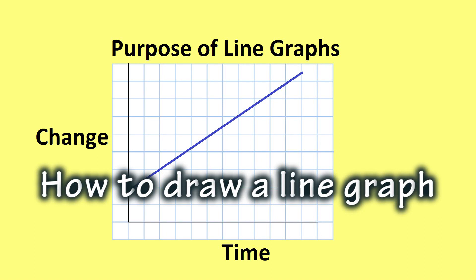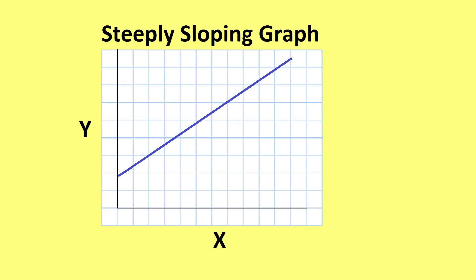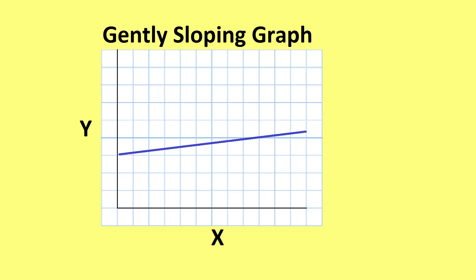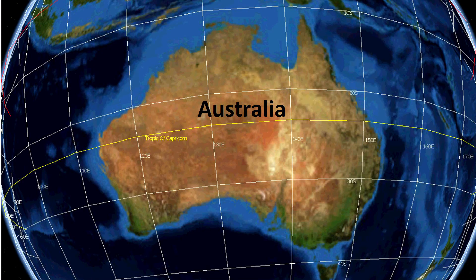Line graphs are useful for showing change over time. A steeply sloping graph indicates rapid change, while a gently sloping graph indicates slow change. Today I am going to construct a line graph to show the change in the population of Australia from 1906 to 2011.